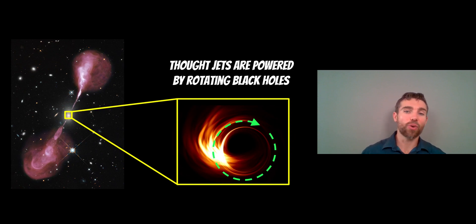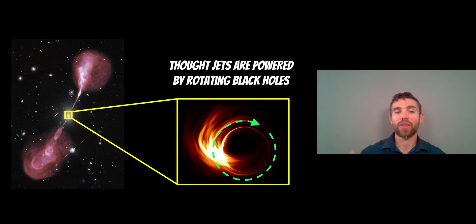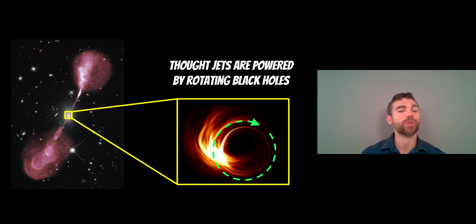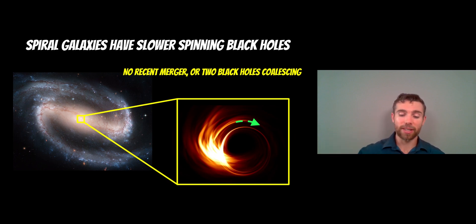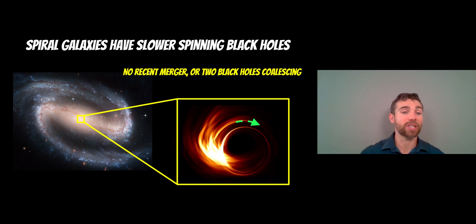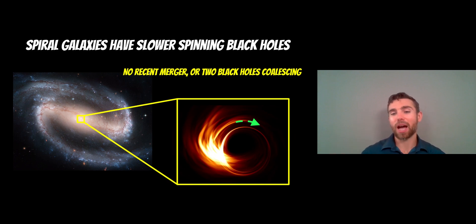These jets are thought to be powered by rotating black holes. The supermassive black holes at the centre have some rotation, and it's that rotation which is thought to power these powerful jets. Spiral galaxies are likely to have slower spinning black holes — they are spun up by the accretion disc as that material falls onto the black hole, but it's not able to spin them up significantly enough to power the most powerful jets. So spiral galaxies are likely to have slower spinning black holes and therefore less powerful jets.